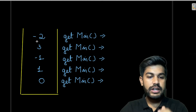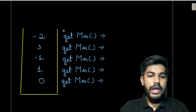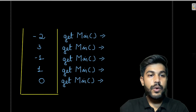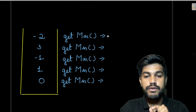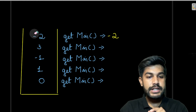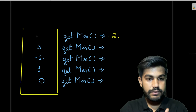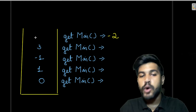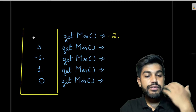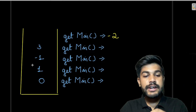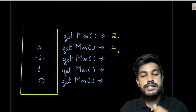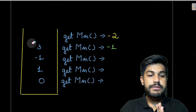Let's take an example. Suppose we have the elements: -2, 3, -1, 1, 0. If we run get_min at this position it would return -2 as the minimum value. Then if we pop out -2, we have 3, -1, 1, 0 remaining. Calling get_min now would return -1 as the minimum element.